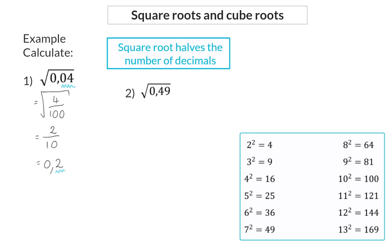In example 2, I can start off focusing on 49 square root, which will be 7. Now the number of decimals, which is 2 at the moment, will be halved to one decimal. Of course, then 7 will be that decimal, so my answer is 0.7.